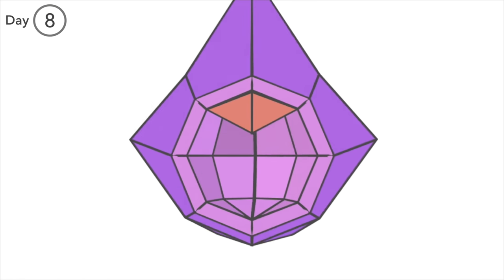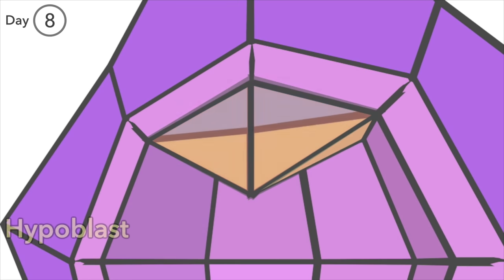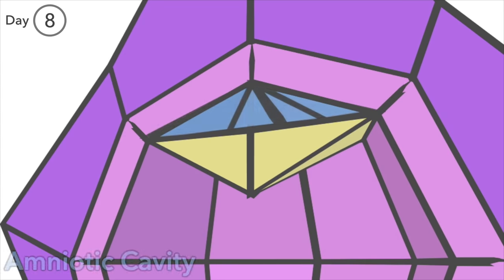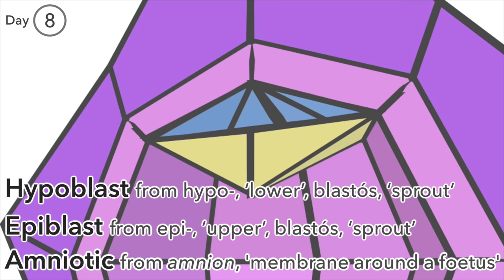Day 8. The inner cell mass differentiates into hypoblast and epiblast. A space develops in the epiblast, the amniotic cavity. Hypoblast meaning lower sprout, epiblast meaning upper sprout, and amniotic comes from amnion, which is Latin for membrane around a fetus.